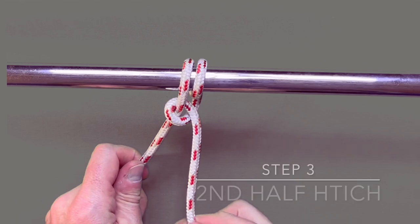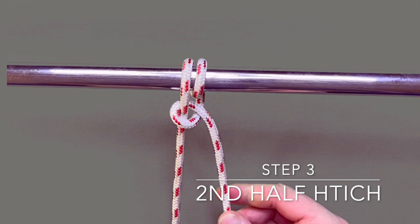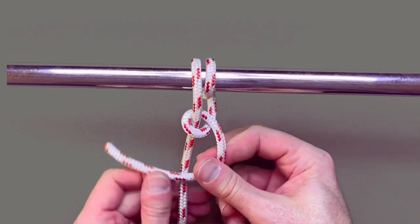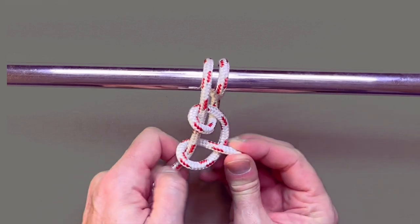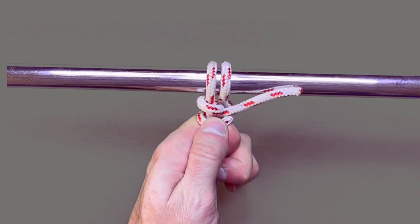For step three, you want to repeat step two, ensuring you go in the same direction, working end over standing, then back up through to complete the second half hitch under the round turn.